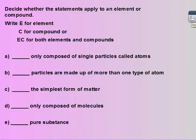Go ahead and pause the video and figure out if these statements refer to an element, a compound, or both elements and compounds. So if it's only composed of single particles called atoms, that would be an element. If it's made up of more than one type of atom, then it has to be a compound. Simplest form of matter is an element. Only composed of molecules would be a compound. Elements can also be composed of molecules, but they don't have to be. They could be just an atom. And pure substance would be element and compound.